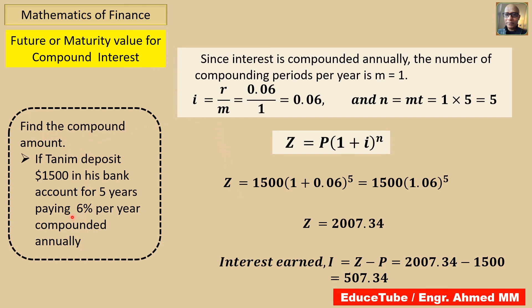Here is an example to understand what was discussed. If Tanim deposits $1500 in his bank account for 5 years at 6% per year compounded annually: M equals 1, so i equals 0.06 and N equals 1 times 5 equals 5. Using the formula with i and N, we get Z equals 2007.34. Interest equals Z minus principal.